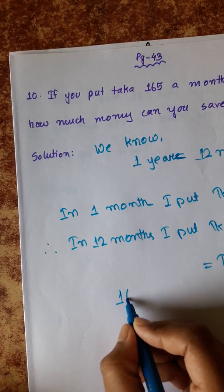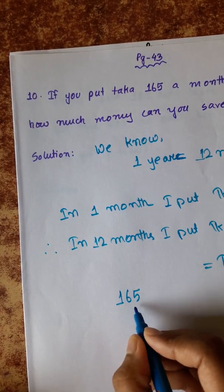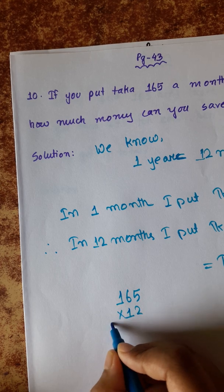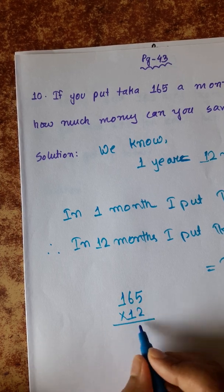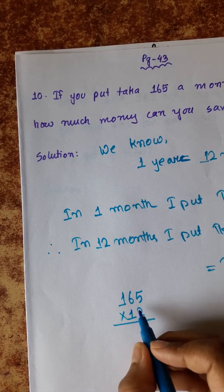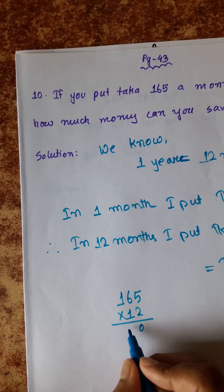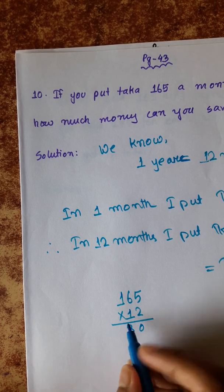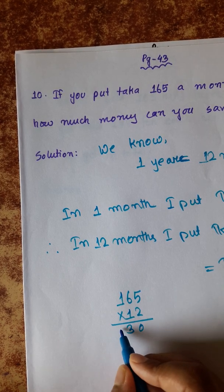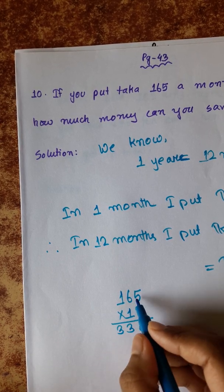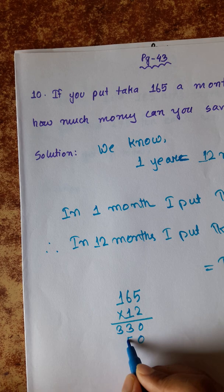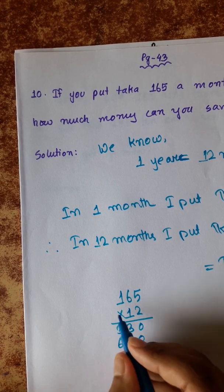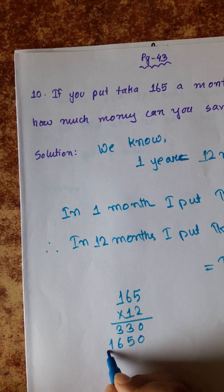Calculating 165 into 12: 5 twos are 10, carry 1; 6 twos are 12, plus 1 is 13, carry 1; 1 two is 2, plus 1 is 3. Then 165 into 10: giving 1650. Adding the partial products: 330 plus 1650 gives 1980. So in one year you can save taka 1980.